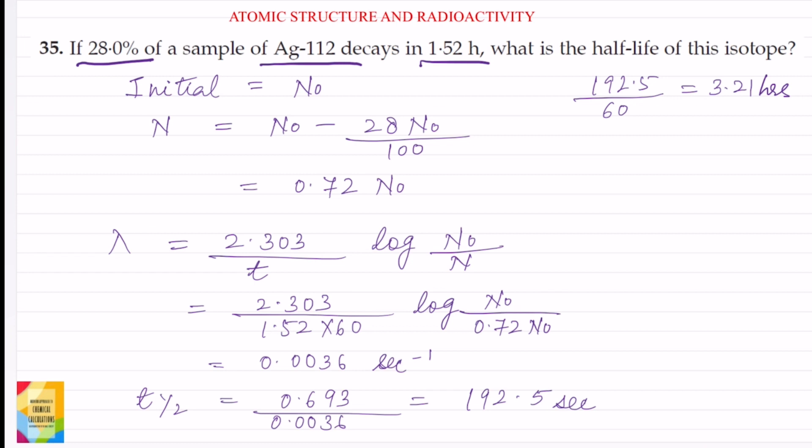Let us assume that the initial concentration of this isotope is N0. The final concentration will be equal to, now 28% of the sample decays, so the final concentration will be equal to N0 minus 28% of N0.